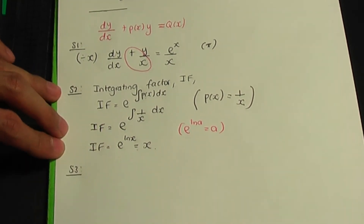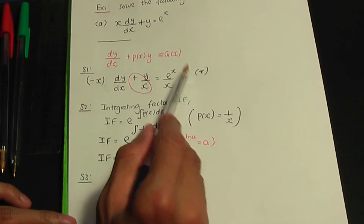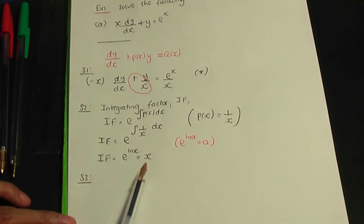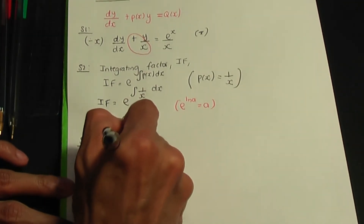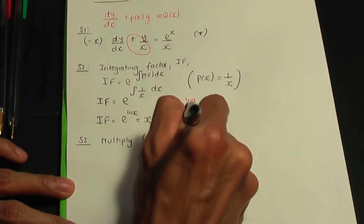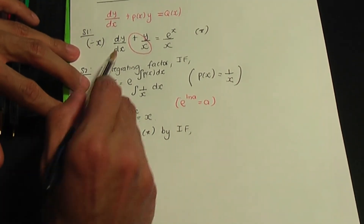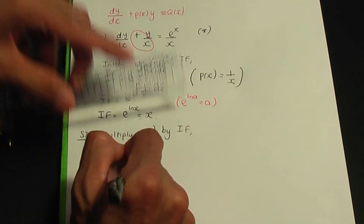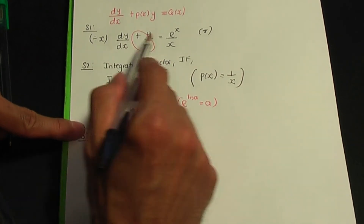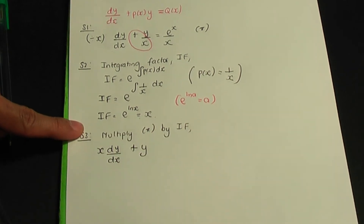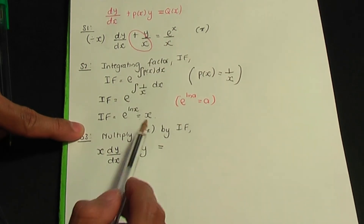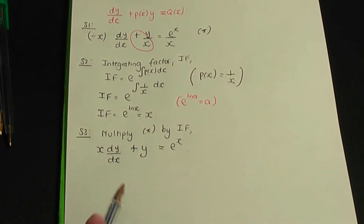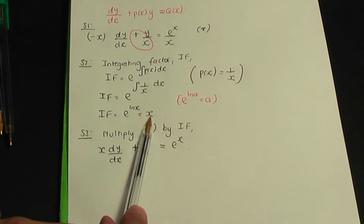Step three: multiply the standard form equation throughout by the integrating factor x. This gives x dy/dx plus y equals e^x, since 1/x times x equals 1, and e^x/x times x equals e^x.